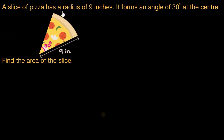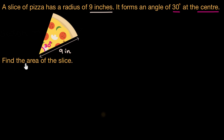A slice of pizza has a radius of 9 inches. It forms an angle of 30 degrees at the center. Find the area of the slice.